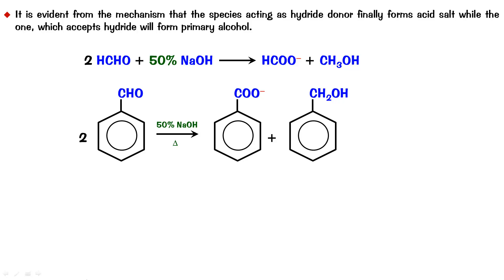Sometimes you can have an aldehyde with an alpha hydrogen that does not show an aldol reaction but shows Cannizzaro instead. Look at this one — 2-methylpropanal. You will notice that this is the alpha carbon and it contains alpha hydrogen. In spite of this, it shows a major product of Cannizzaro rather than aldol, and that is for two reasons.